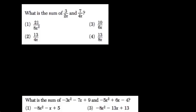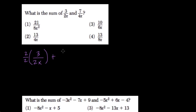What is the sum of these two? Well, 3 over 2x and 7 over 4x have different denominators, but both denominators go into 4x. So just like with fractions, I'll multiply 3 over 2x by 2 over 2, which is 1, of course. So I can get 4x.